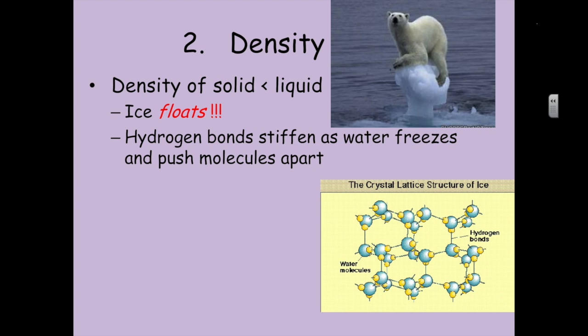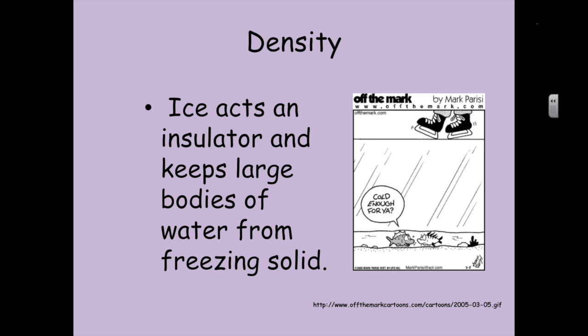The second property of water is its density. The solid is less dense than a liquid, so ice will float. That's because the hydrogen bonds stiffen as water freezes and pushes the molecules further apart. This will increase the volume. If I increase the volume, I will decrease the density. Ice will act as an insulator and it keeps large bodies of water from freezing totally solid. A very large lake will only freeze maybe a foot deep when the rest of the water is still liquid water. And that's how the fish can still survive from year to year.